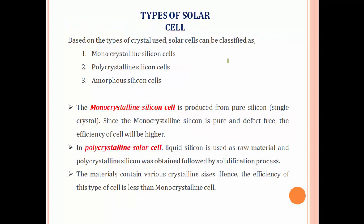There are three broad types of solar cells: monocrystalline, polycrystalline, and amorphous silicon cells.